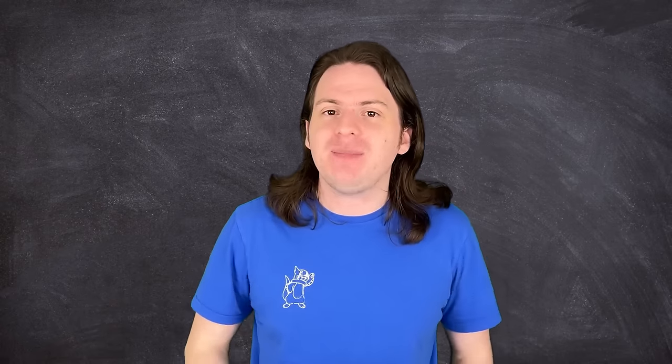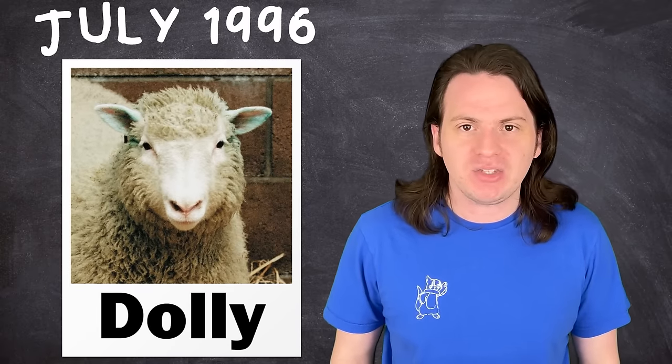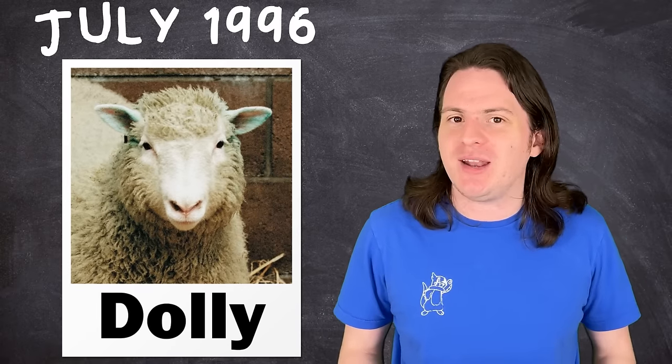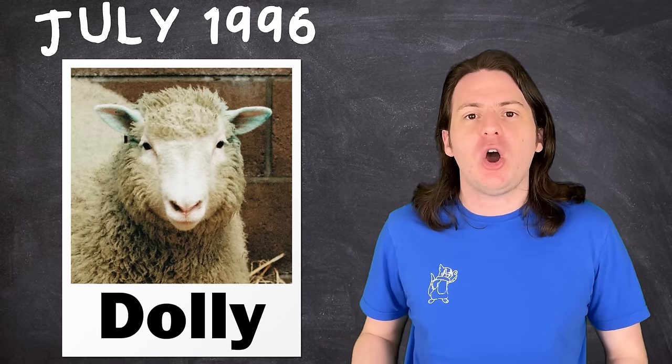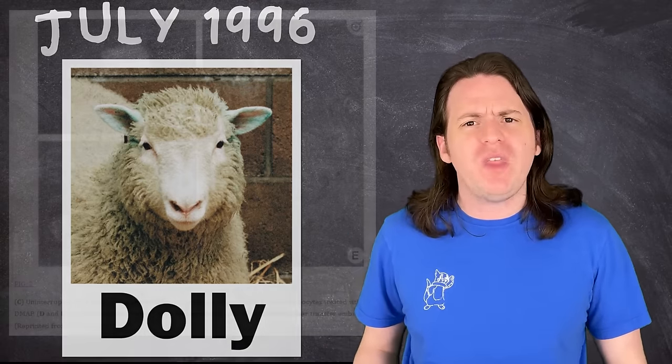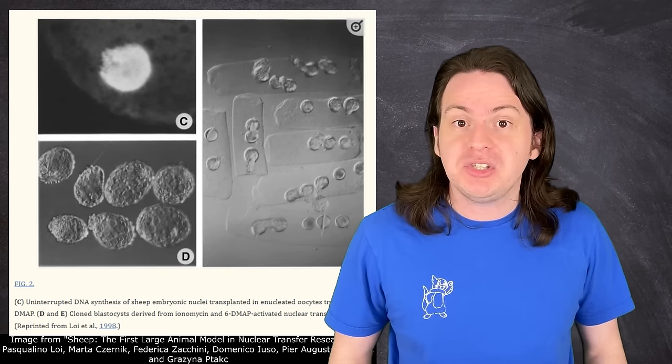This may sound like some insane science fiction, but it's actually been done successfully in real life. The first and most famous example of cloning, with mammals at least, was Dolly the sheep. Dolly was cloned from a cell from the mammary gland of a Finn-Dorset sheep in July of 1996. Researchers from the Roslin Institute just outside of Edinburgh, Scotland were trying to test if it was possible to create a clone of a complex mammal using only a single specialized cell. And what they found was yes!